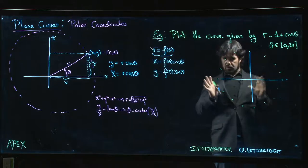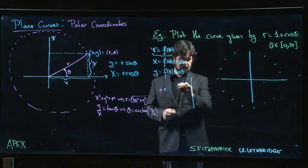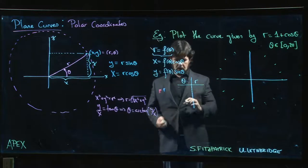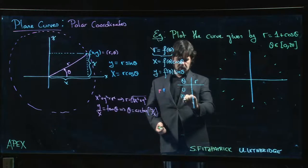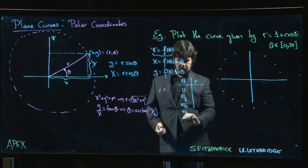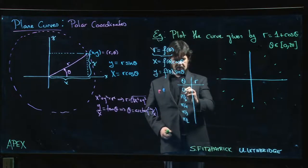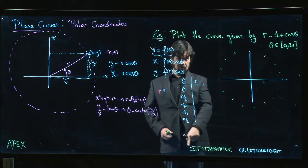You just actually do a direct kind of plotting. You maybe even do a table of values. So you might even do theta, r: zero, pi over six, pi over four, pi over three, pi over two and so on. I'm going to run out of board before I get all the way around the unit circle.